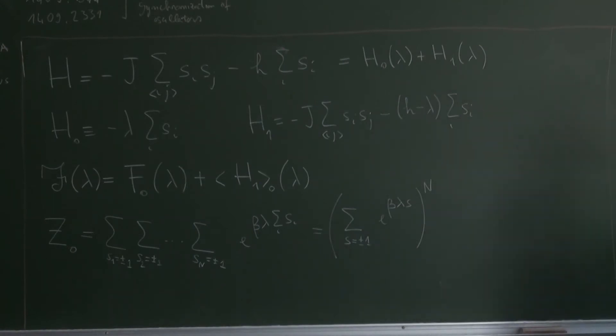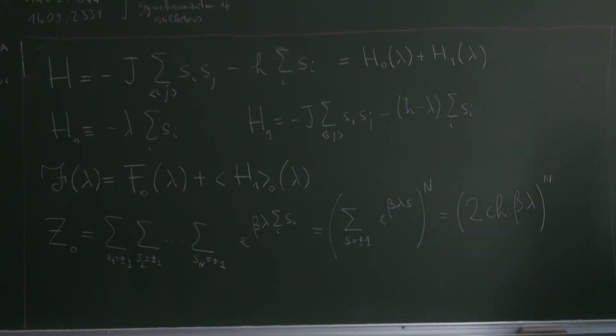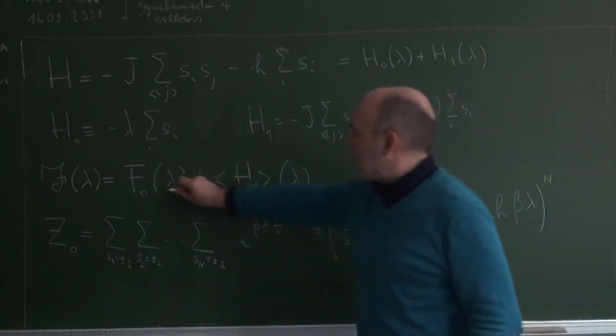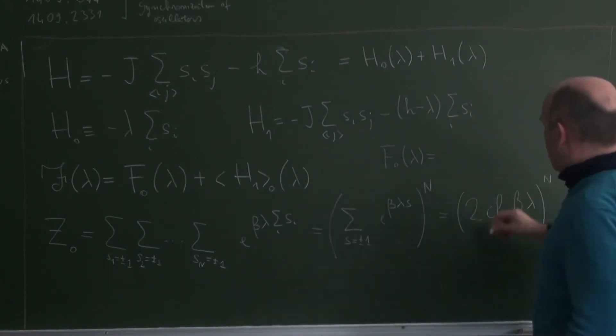This is something that we have seen, this is a system of non-interacting spins. And this one I can also write two times hyperbolic cosine of beta lambda to the nth power. This is the result of the first part of my calculation. Therefore, this free energy, the free energy F0 of lambda is equal to minus kBT, the log of this.